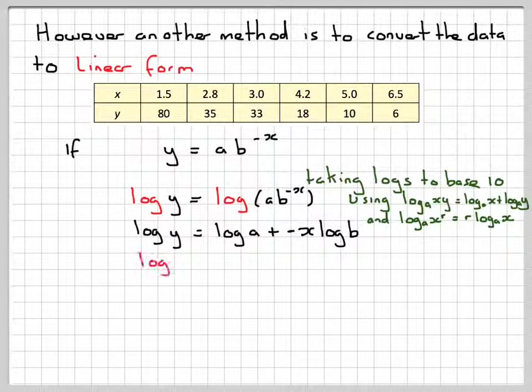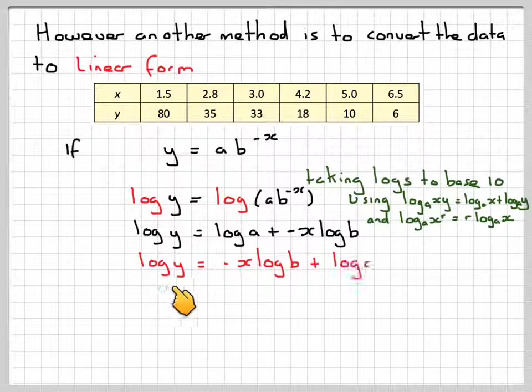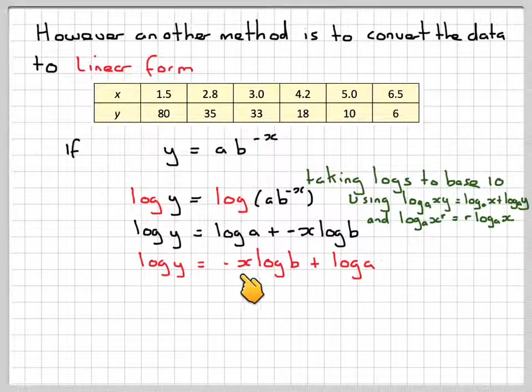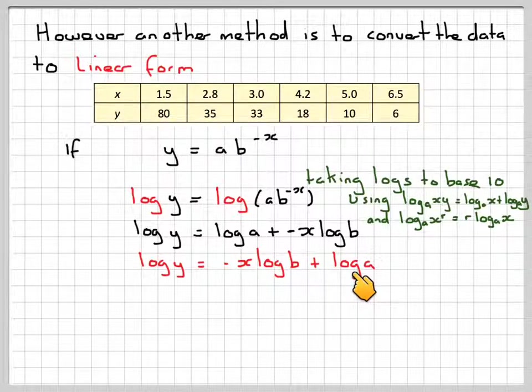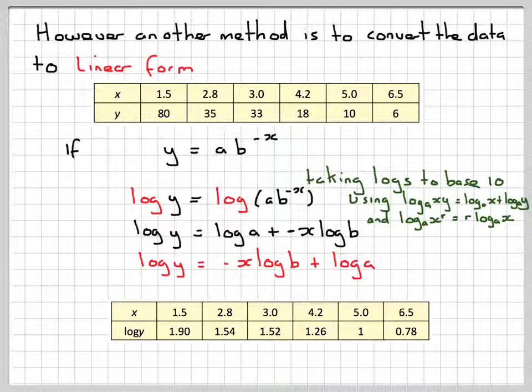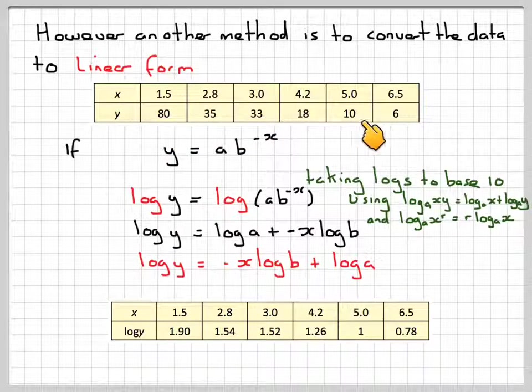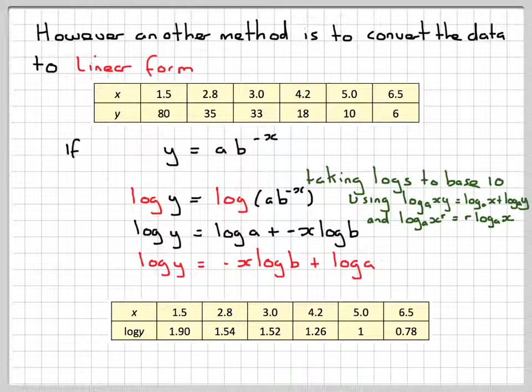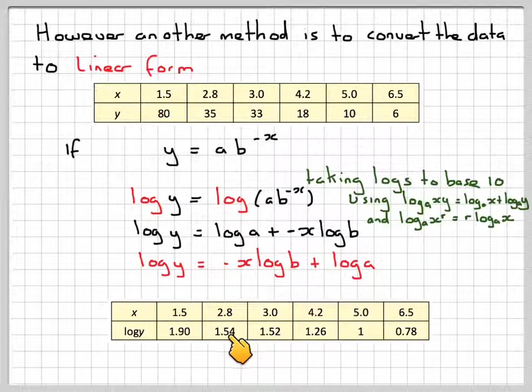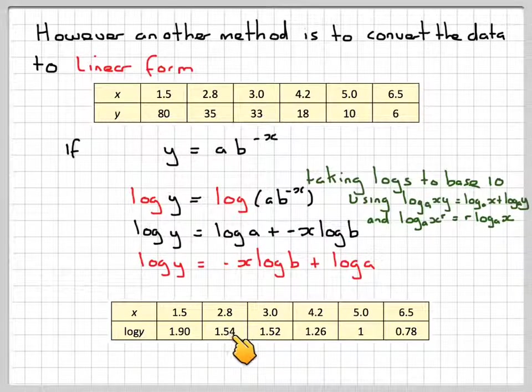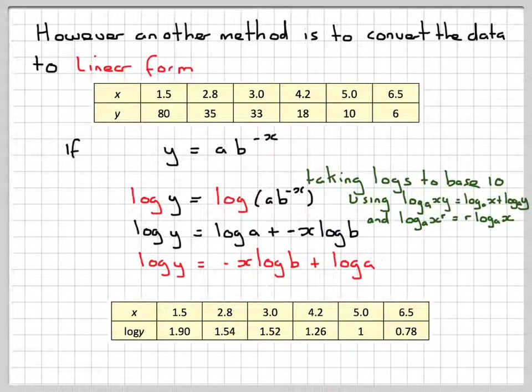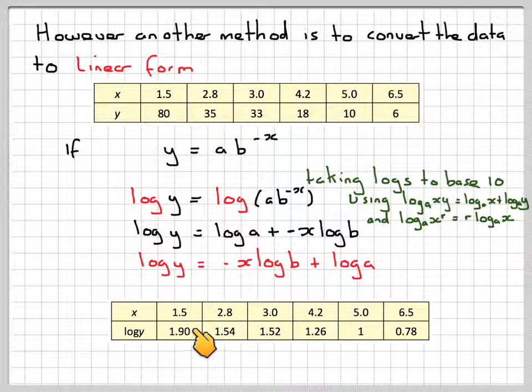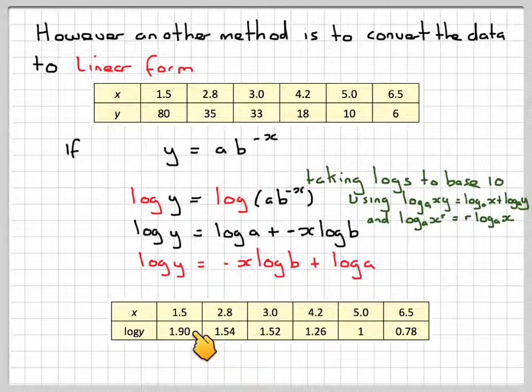Pause the video here if you're having trouble following that and have a good look for yourself. Continuing on, I'm going to rewrite this as log y equals minus x log b plus log of a. Now if I convert this bottom row here by taking the log, so log of 80 is 1.90, log of 35 is 1.54, etc. And now on a different axis, I'm going to select x and plot x against log of y.